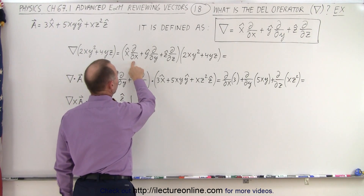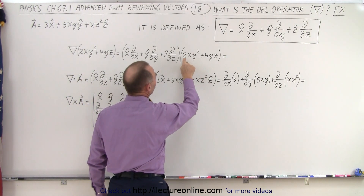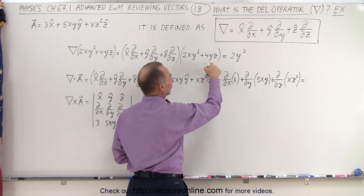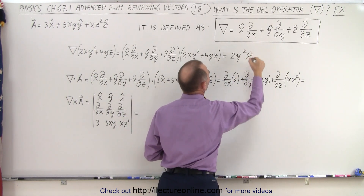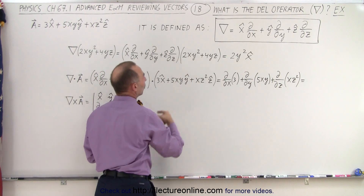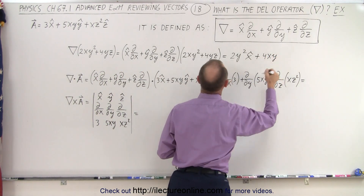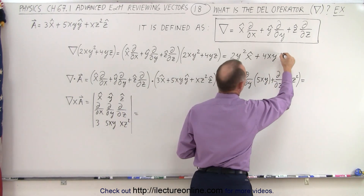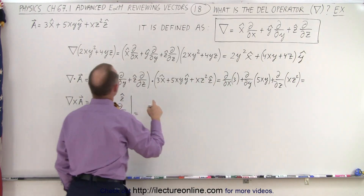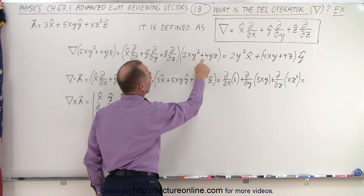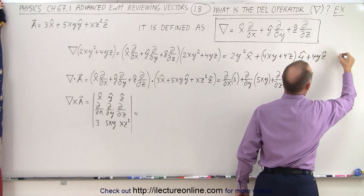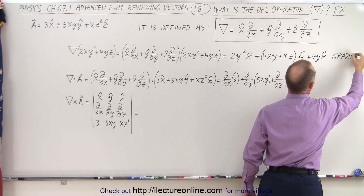Taking the partial derivative with respect to x, we get 2y squared times the x unit vector. Taking the partial derivative with respect to y, we get 4xy plus 4z, times the y unit vector. Finally, taking the partial derivative with respect to z, we get 0 from the first term and 4y from the second, giving plus 4y in the z direction. This result is called the gradient, and it is indeed a vector quantity.